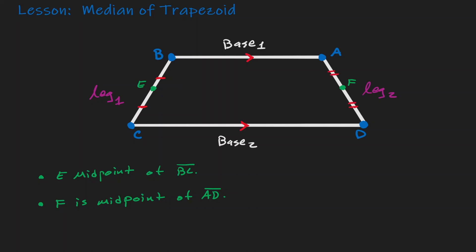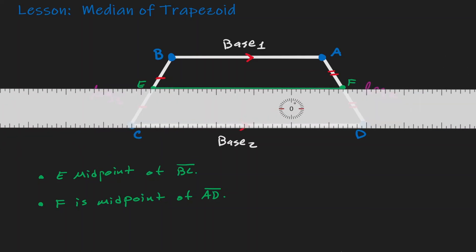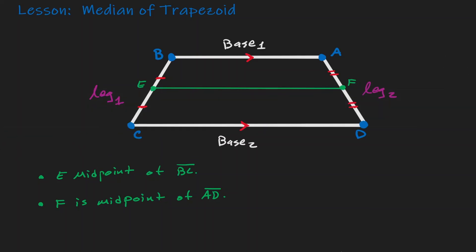But what if we connect the midpoints of each of those legs? That line that connects the midpoints is what we are going to refer to as the median of a trapezoid — a line segment that connects the midpoints of both legs.